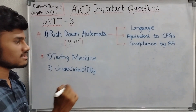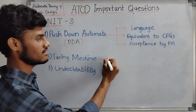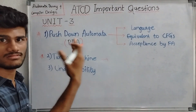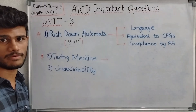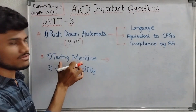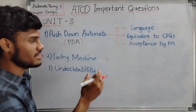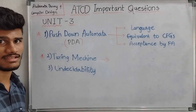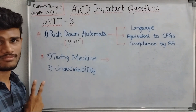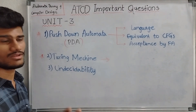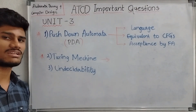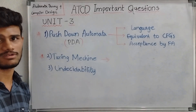Next we have the Turing Machine. Key concepts include the language of Turing Machine and how finite automata is linked with Turing Machine. There are different topics in Turing Machine, and you can explain the sub-topics to score 10 marks. There are two main questions covered in this third unit.